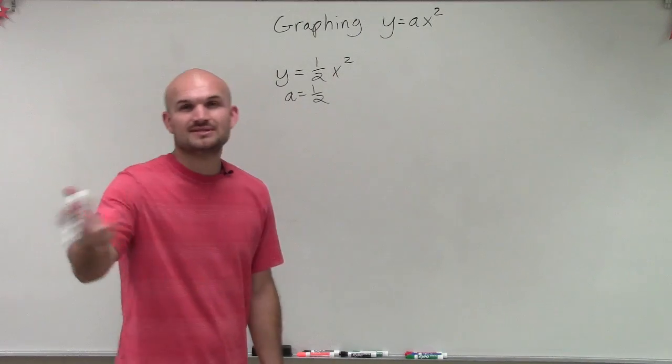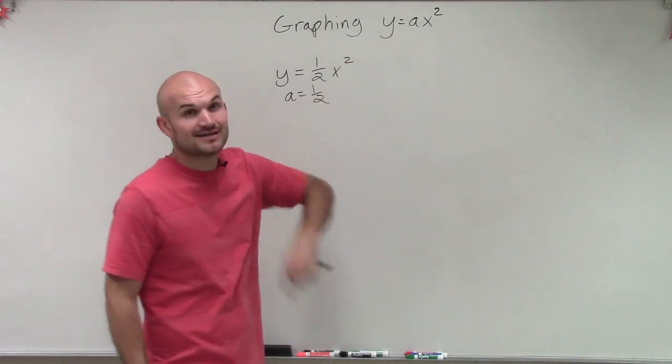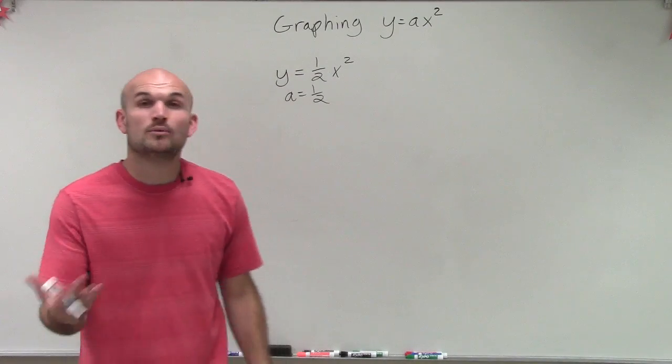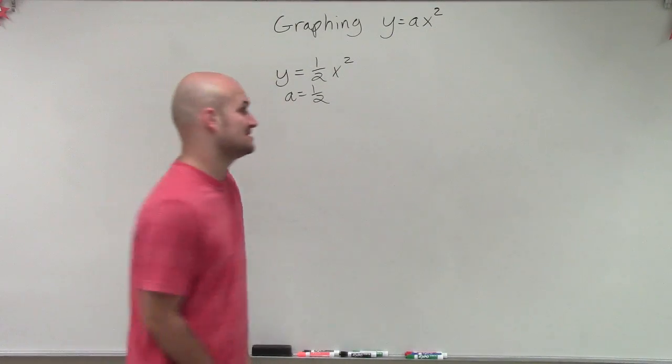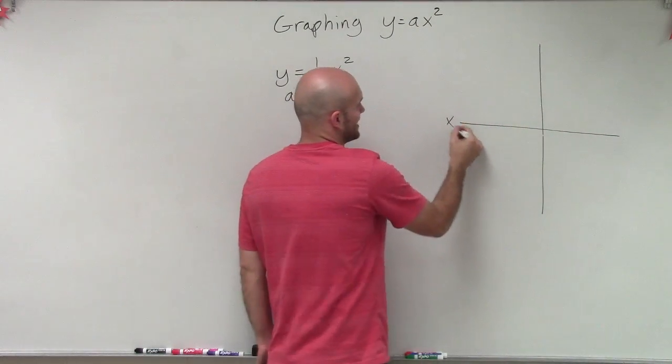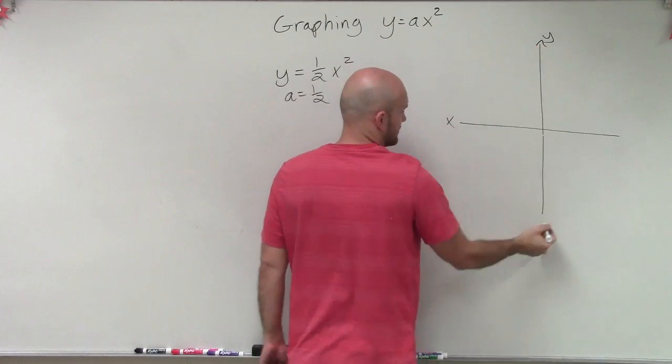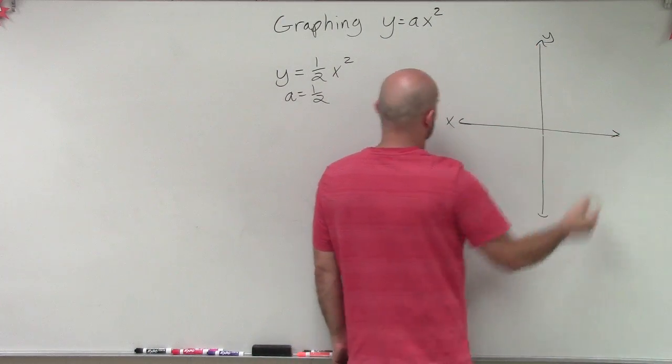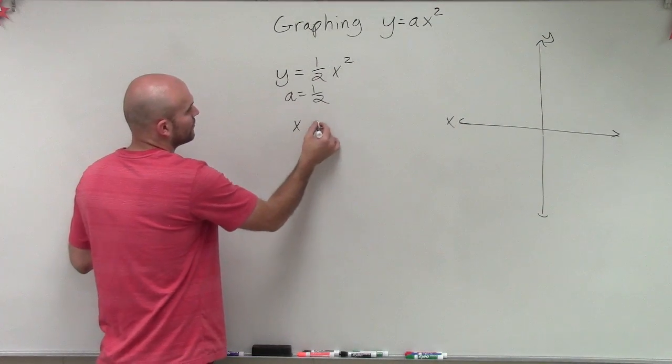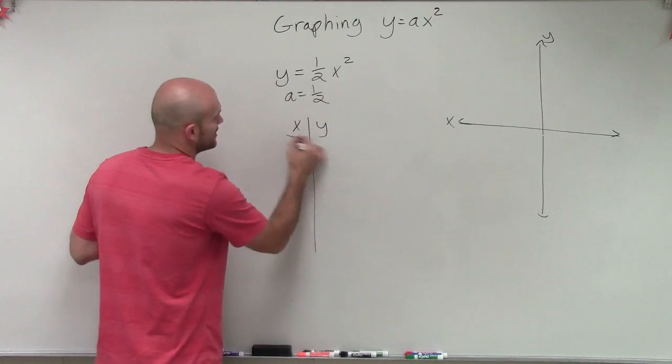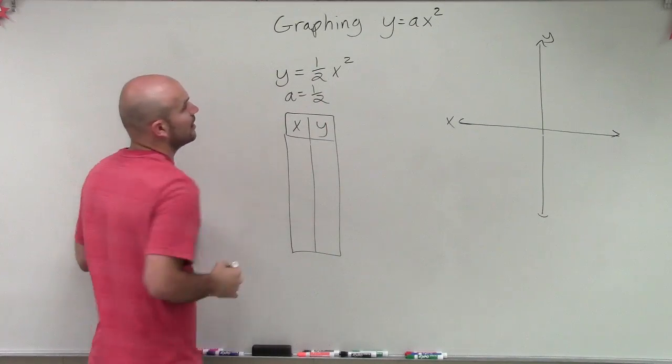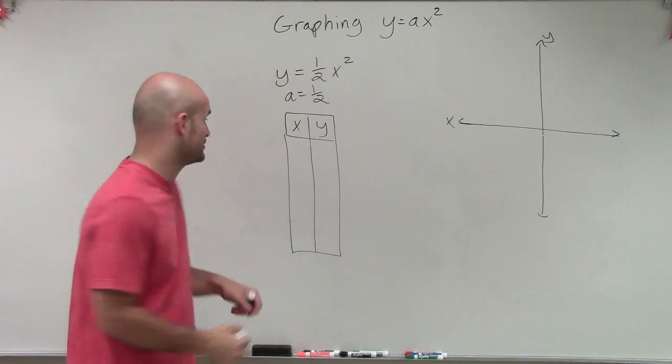Let's just go and take a look at how to graph a problem like this. When I have an equation in the form of y equals ax squared, we know that the axis of symmetry is going to be at zero. And that's very, very important. Now we have an x-axis and a y-axis.